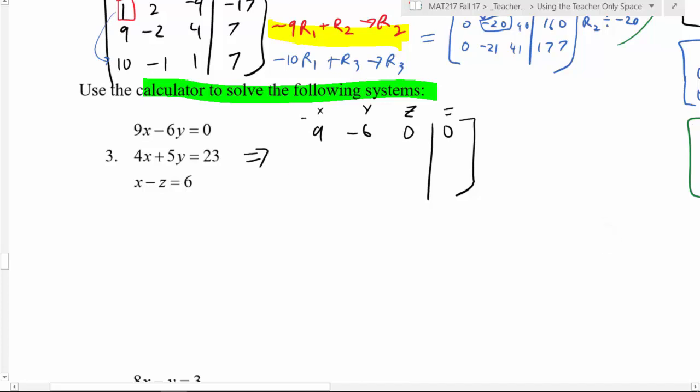The second equation would be 4, 5, 0, 23, again because there's no z. Then the last one would be 1, 0, negative 1, 6, because there's no y in that equation.